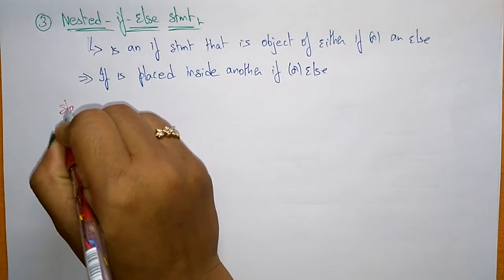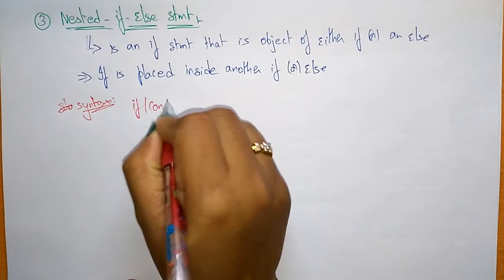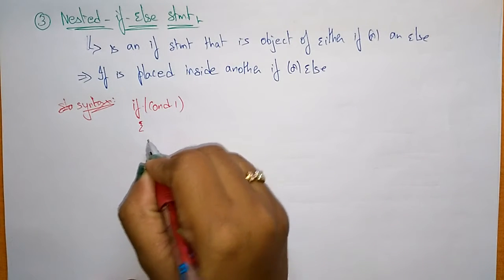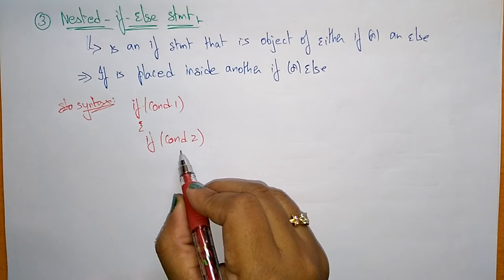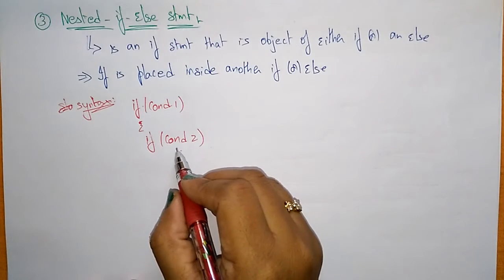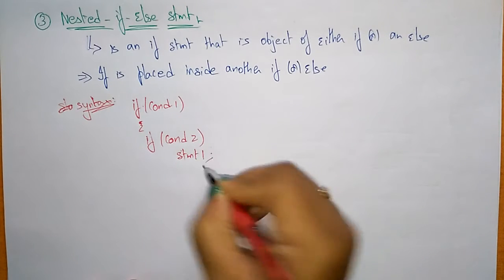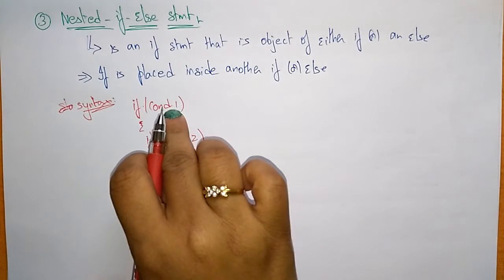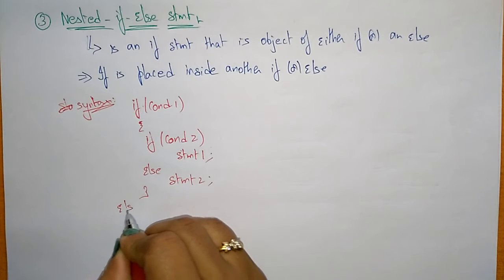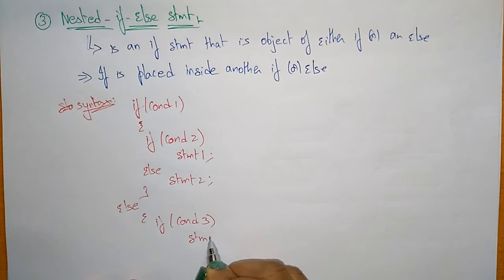Nested if syntax: first you have to check the condition. If condition one is satisfied, enter into this block; there again check another condition, condition two. If condition two is also satisfied, statement one will execute, else statement two executes. Or else, if condition one is not satisfied, it enters the else statement and checks condition three. If condition three is satisfied, statement three executes; else statement four executes.